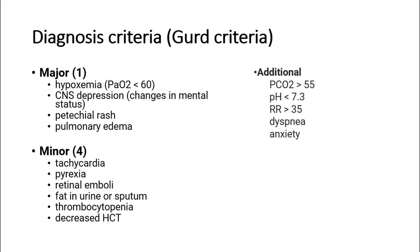There is a Gurd criteria to diagnose fat embolism syndrome. To diagnose this condition, it requires at least one major criteria and at least four minor criteria. Major criteria are hypoxemia, CNS depression, petechial rash, and pulmonary edema.